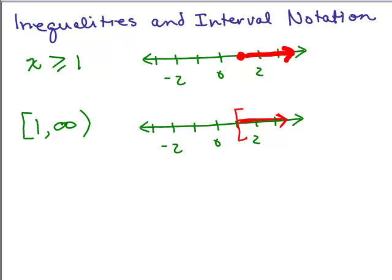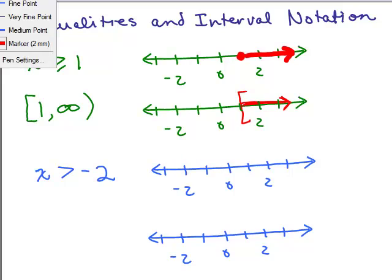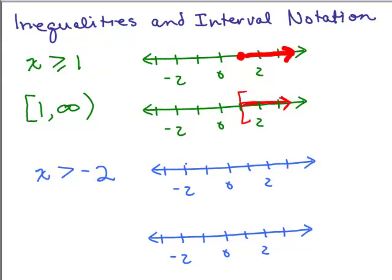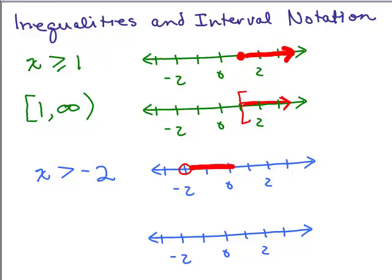What if instead of being greater than or equal to 1, it was just greater than something? Let's say the problem was x greater than negative 2. What's the smallest number it can be? Since it's greater than negative 2, there's no smallest number just to the right — so this one's a little bit tricky. Using the older notation, we put a circle on negative 2 to show it doesn't exactly touch negative 2, and then we draw an arrow going to the right.